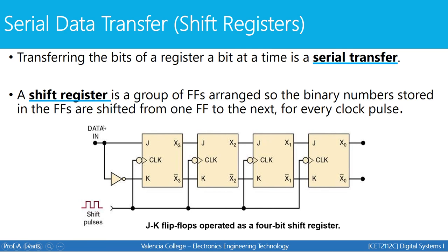A new piece of data can be shifted in to the first register with each clock pulse. Looking at this JK flip-flop shift register diagram, J and K are always going to be opposites of each other, so you're only ever setting or clearing a flip-flop — never toggle, never no change. If data in is a 1, J is 1 and K is 0, so the output will be 1. If data in is a 0, J is 0 and K is 1, clearing the flip-flop so the output is 0.